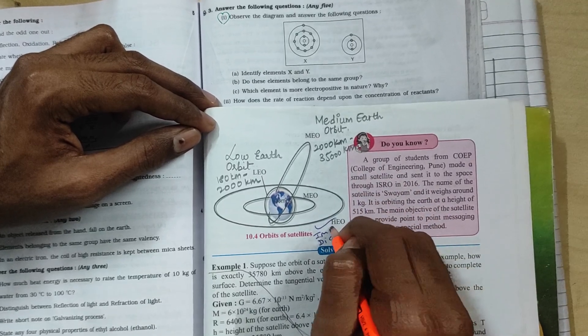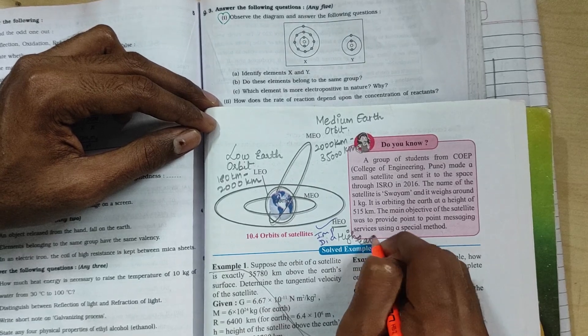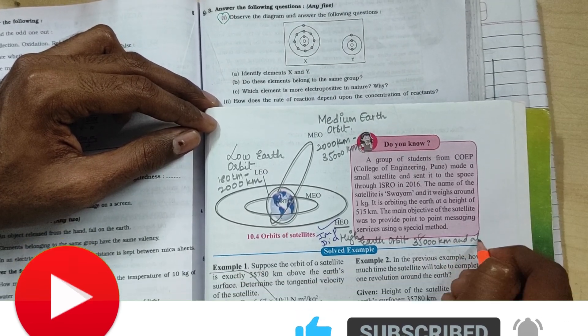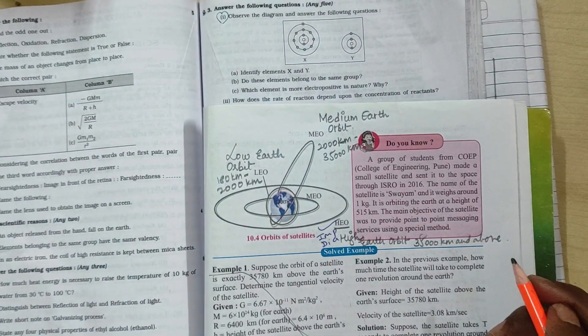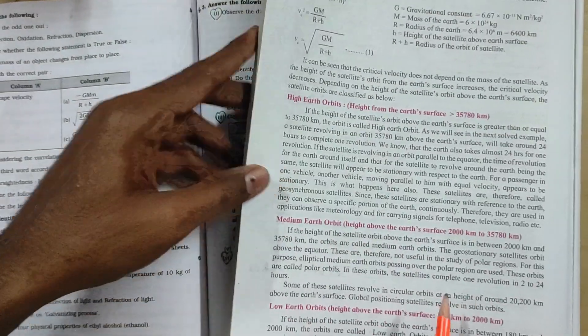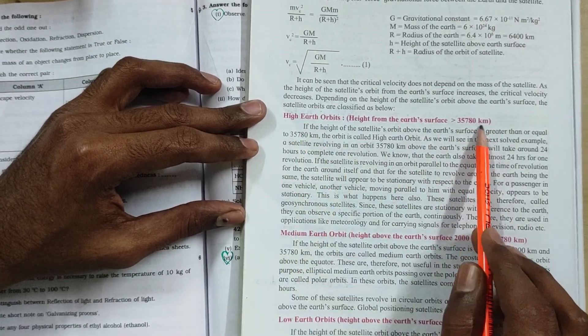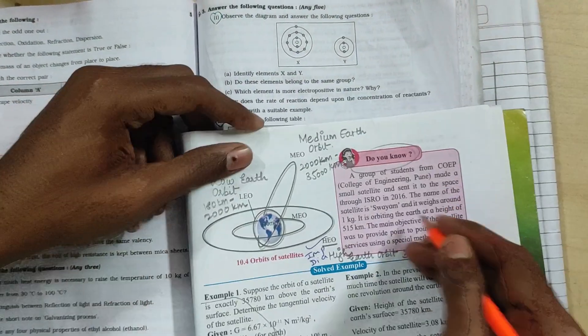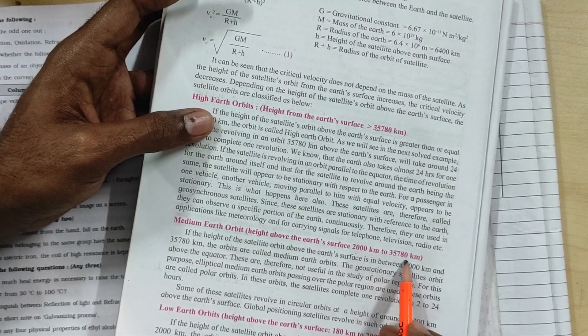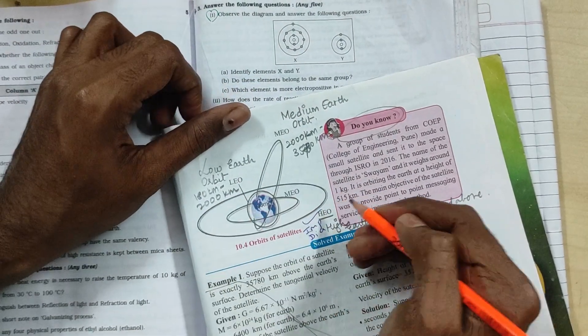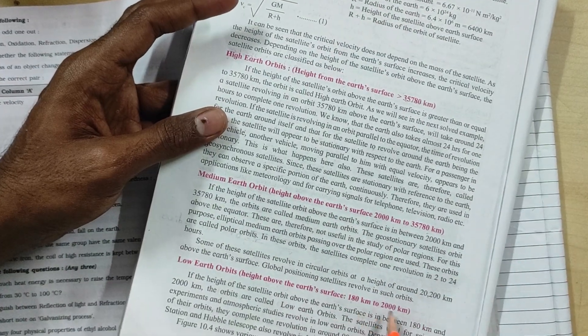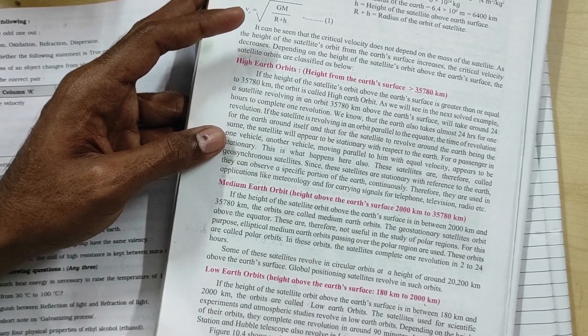Then we have the last thing, HEO - high Earth orbit. High Earth orbit is from 35,000 kilometers and above. Am I clear to all of you?